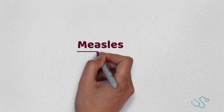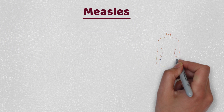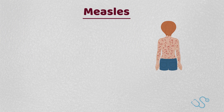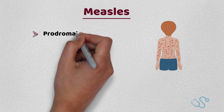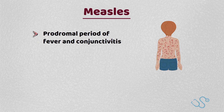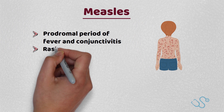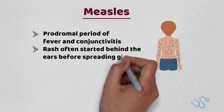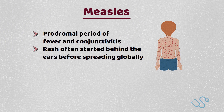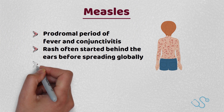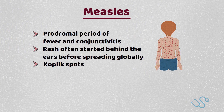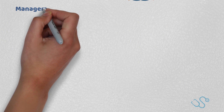Measles — recently there have been many new outbreaks given the poor uptake of the MMR vaccine in recent years. There's often a prodromal period of fever and conjunctivitis, with the rash often starting behind the ears and spreading globally. There is also the presence of Koplik spots, which are pathognomonic white spots seen in the mucosa of the mouth.